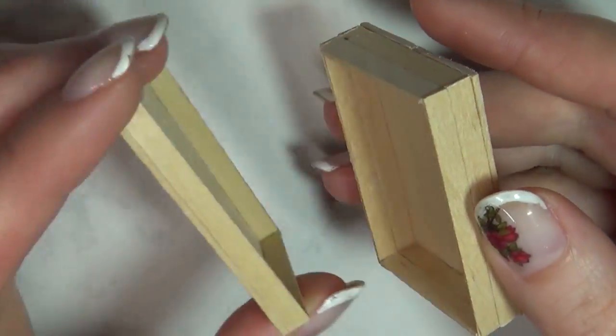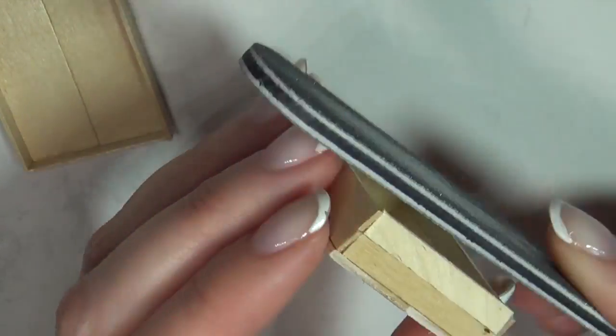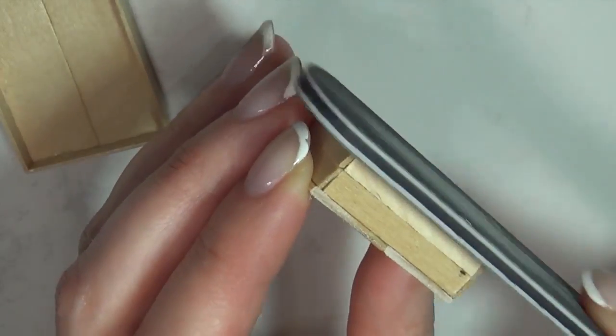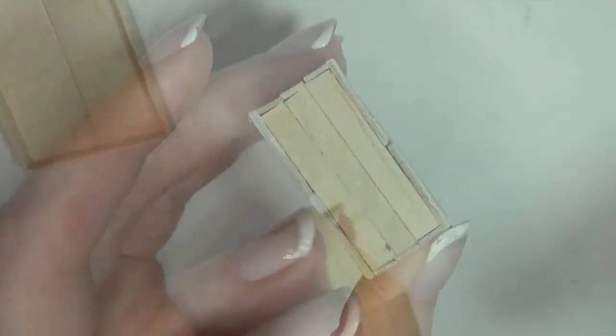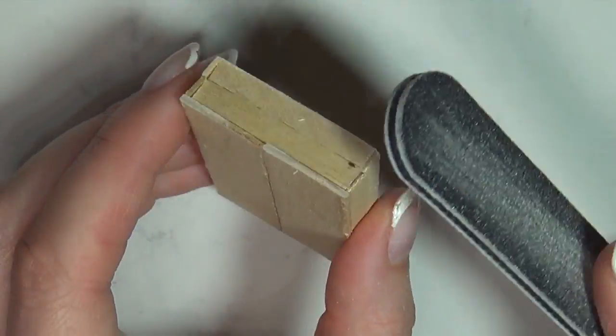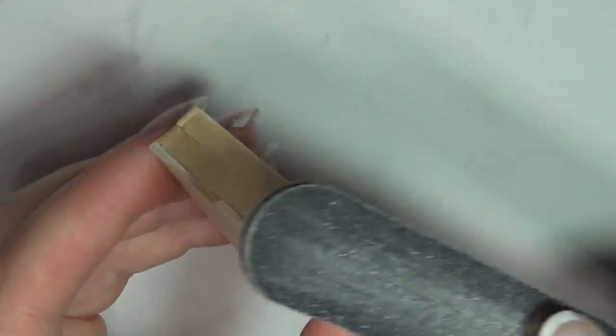Since the stirring sticks come a little uneven, you might need to file them to make a good fit. Once the two pieces fit nicely together you can go around the outside with the file to make everything smooth.